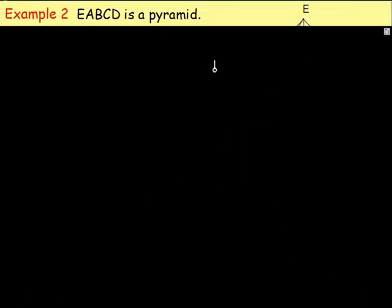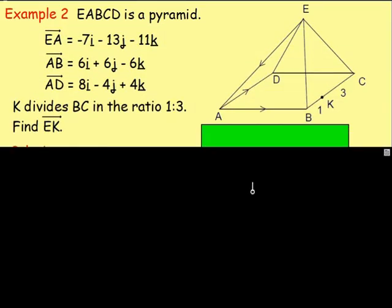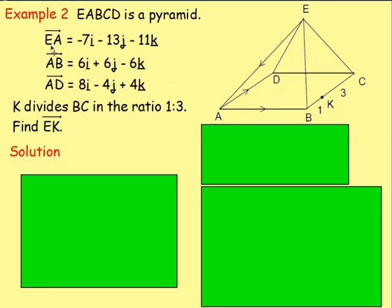Example 2. Once again we have a pyramid E, A, B, C, D. The vertices are A, B, C, D and E. We are told the vector EA — going from E to A — is negative 7i take away 13j take away 11k. We are told AB going from A to B is 6i plus 6j take away 6k. And the vector AD going from A to D is 8i take away 4j plus 4k.